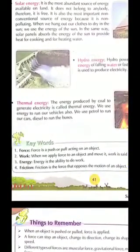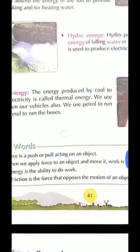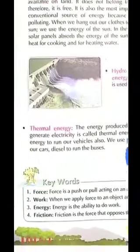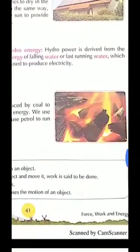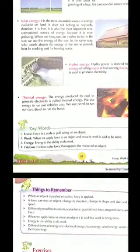Next we talk about thermal energy. So the energy produced by coal to generate electricity is called thermal energy. We use energy to run our vehicles also — we use petrol to run our cars, diesel to run the buses. Thermal energy aur heat energy mein thoda sa fark hai — thermal energy tab use karte hain jab hum electricity generate karte hain using coal, petroleum, diesel. Yahan pe koile ko jala ke again heat energy is getting converted into electrical energy. So energy can change its form from one energy to another.